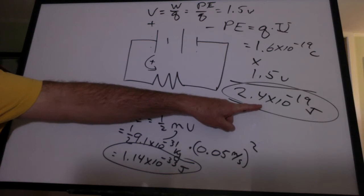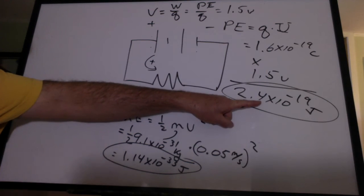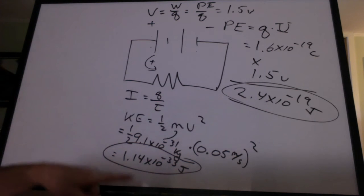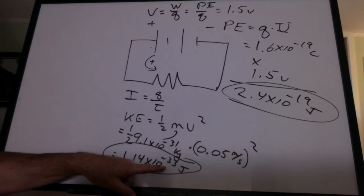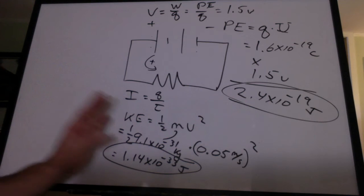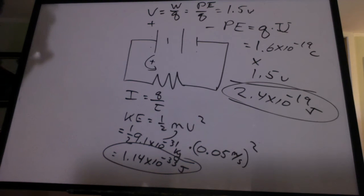That's the potential energy that these charges get from the battery, each electron or proton, however you want to look at it. Each one is getting that much. The kinetic energy is only times 10 to the minus 33. We don't worry about kinetic energy in these circuits. It's ridiculously small.